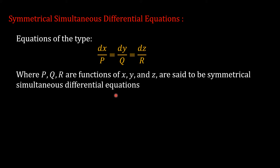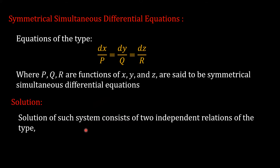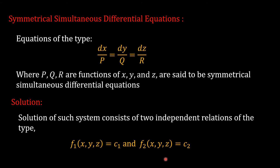The solution of such differential equations consists of mostly two independent relations of the type f1(x, y, z) = c1 and f2(x, y, z) = c2. Any two independent relations obtained from the given Symmetrical Simultaneous Differential Equation constitute the solution of the given differential equation.